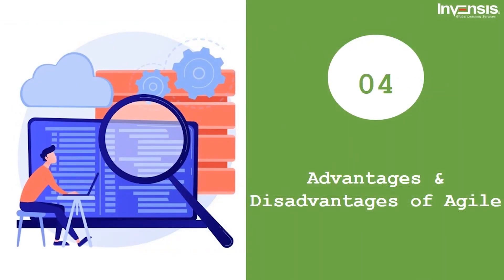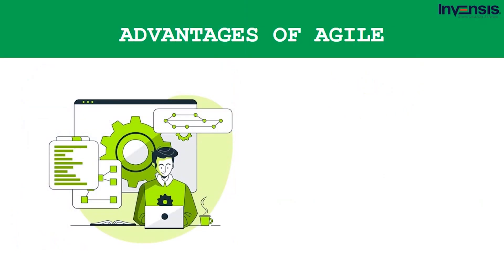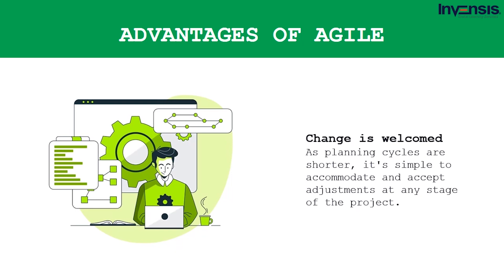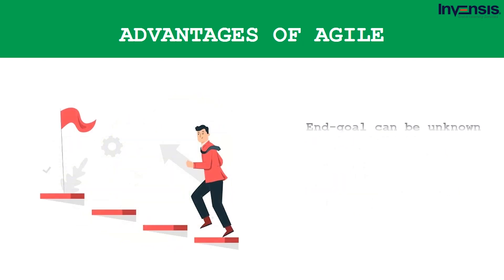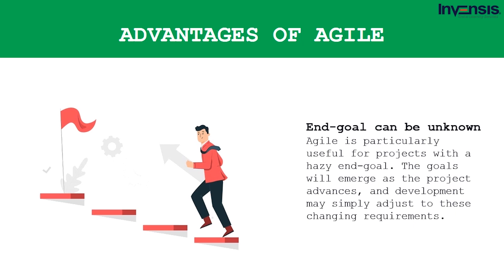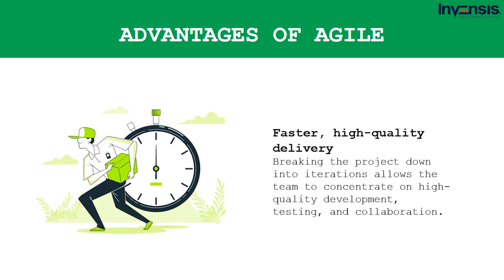Now let's look at the advantages and disadvantages of Agile, starting with advantages. First, change is welcomed — as planning cycles are shorter, it's simple to accommodate adjustments at any stage. The backlog may always be refined and reprioritized, allowing teams to make changes in a couple of weeks. Second, Agile is useful for projects with an ambiguous end goal, as goals will emerge as the project advances. Third, faster, high-quality delivery is achieved by breaking the project into iterations, allowing the team to focus on high-quality development, testing, and collaboration. Testing during each cycle allows bugs to be detected and fixed more rapidly.